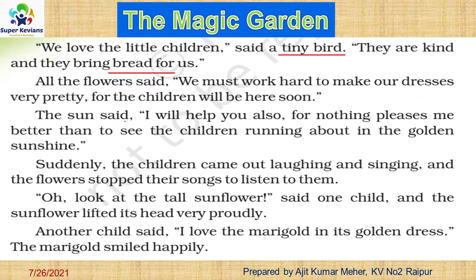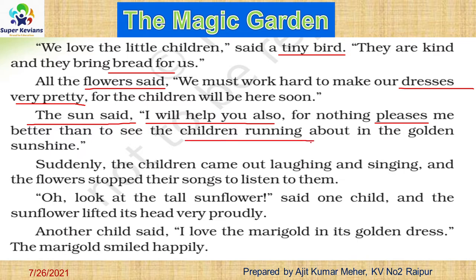All the flowers said, 'We must work hard to make our dresses very pretty, for the children will be here soon.' All the flowers were talking about making their petals very pretty and keeping themselves fresh as the children will come and be happy. The sun said, 'I will help you also, for nothing pleases me better than to see the children running about in the golden sunshine.' The sun was happy to help make the flowers fresh.